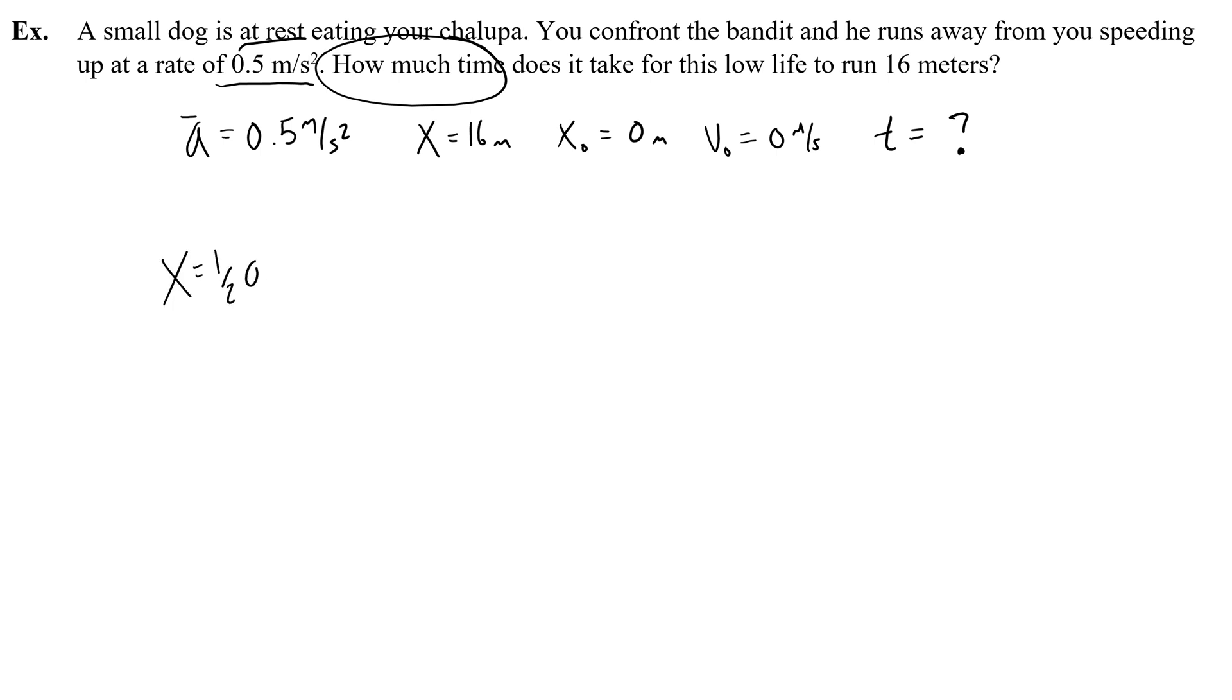It's this one. x equals one-half at squared plus v-naught t plus x-naught. If you were able to see that that was the right equation, good job, golf clap for you. Let's start solving it. Givens, unknowns, equations, solve. When I solve an equation, I like to do two things. First, I want to get rid of anything that is zero because if it's zero, it goes away.